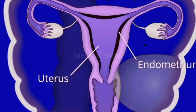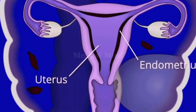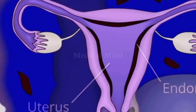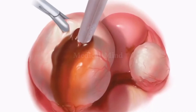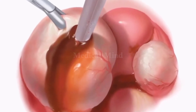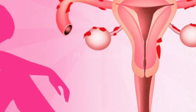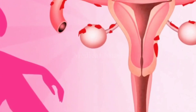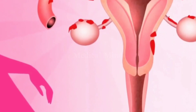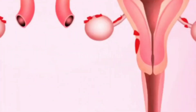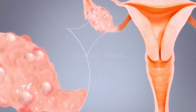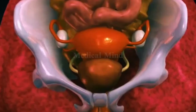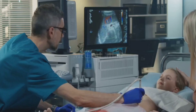Most ovarian cysts form because of normal hormonal changes during your menstrual cycle. Sometimes the body's signals get mixed up, leading to a cyst — this isn't your fault, it's just biology. Conditions like endometriosis can cause cysts called endometriomas, while PCOS leads to many small cysts due to irregular ovulation. Pregnancy can also cause a temporary cyst that supports early pregnancy; this is normal and usually goes away.